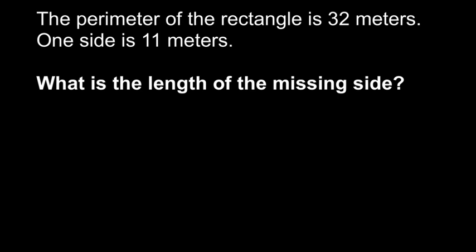Okay, let's look at one more. This time it says that the perimeter of a rectangle is 32 meters, and one side is 11 meters. What is the length of the missing side? So again, we have a missing side.